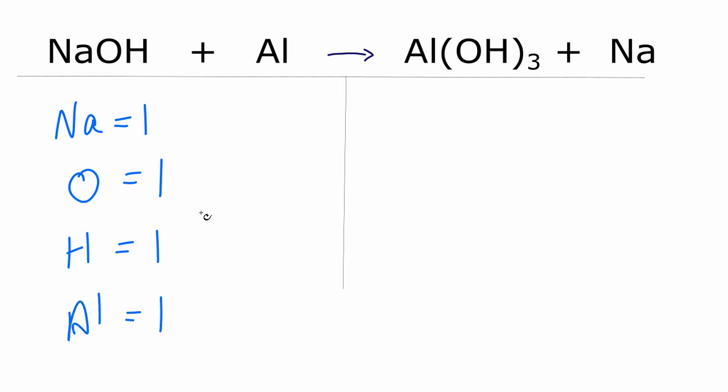On the product side, I have Na, one of those, oxygen, I have three times the one, so oxygen I have three times one, that'll give me three, and then hydrogens, I also have three times the one, I have three of those, and aluminum, I have one.